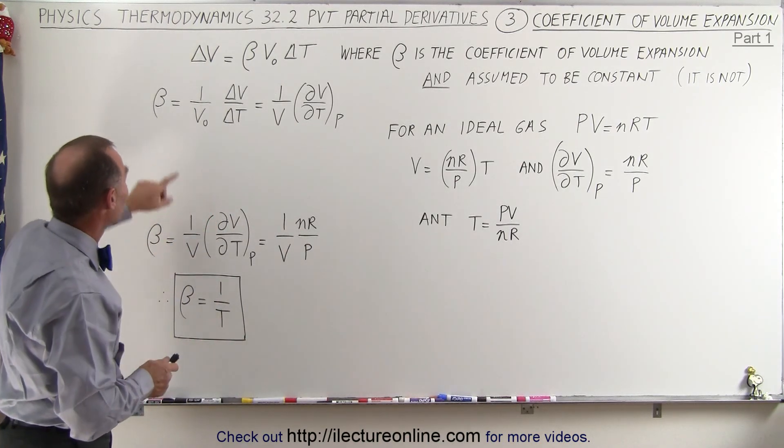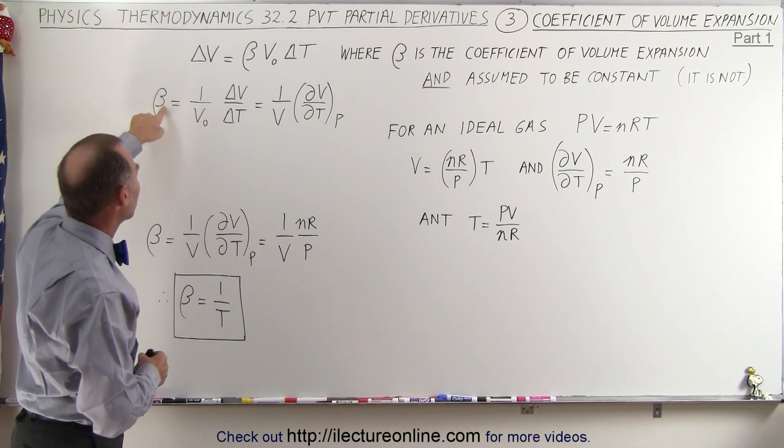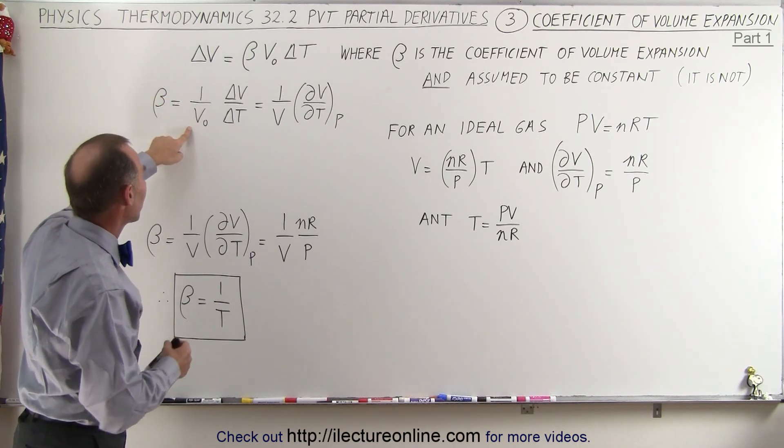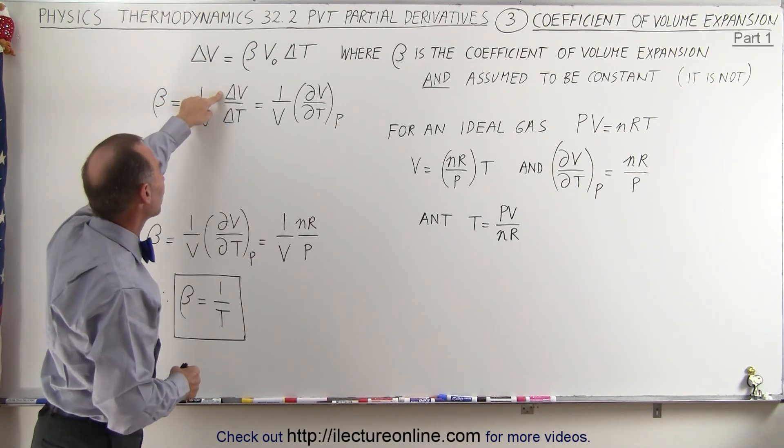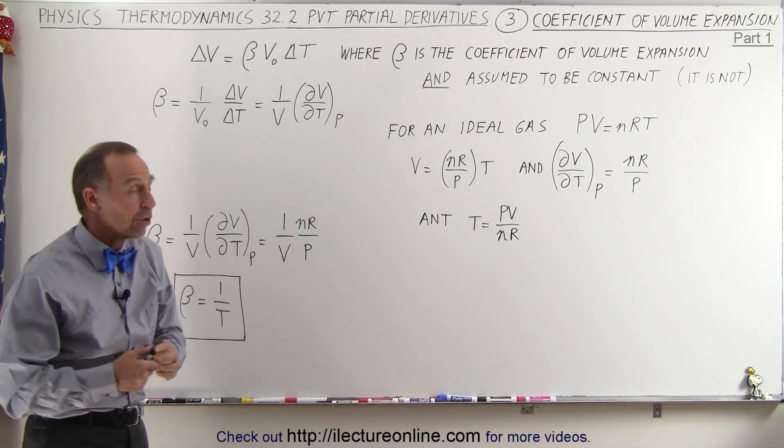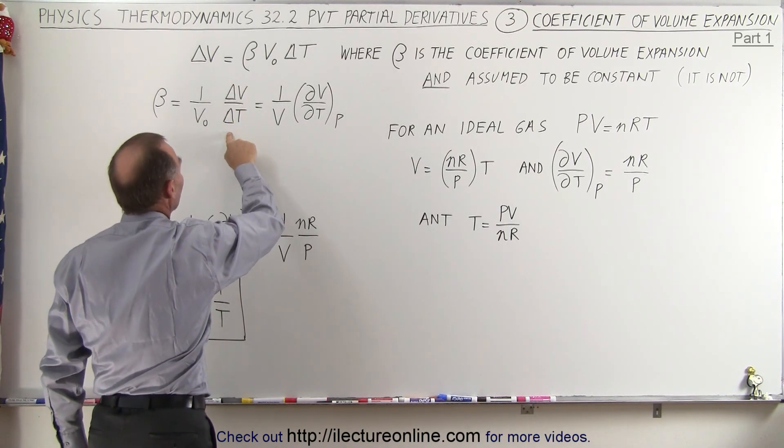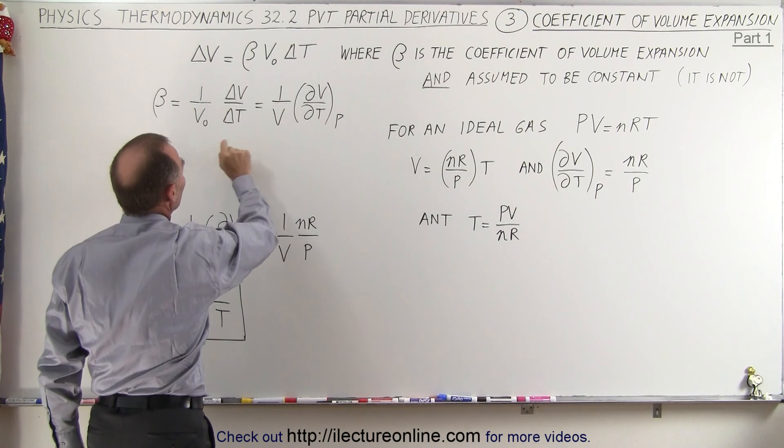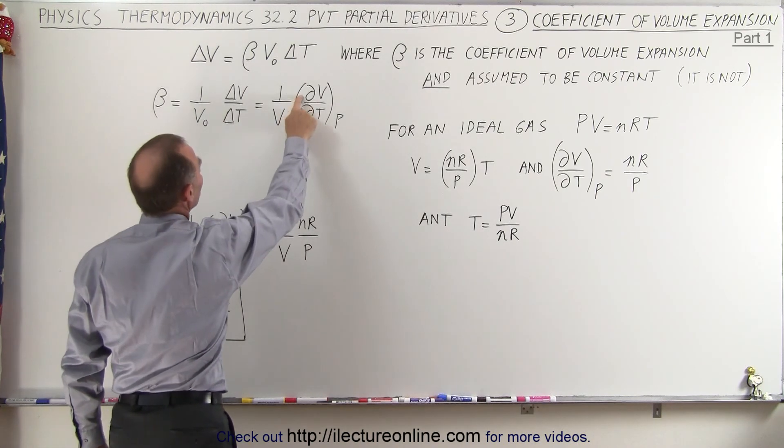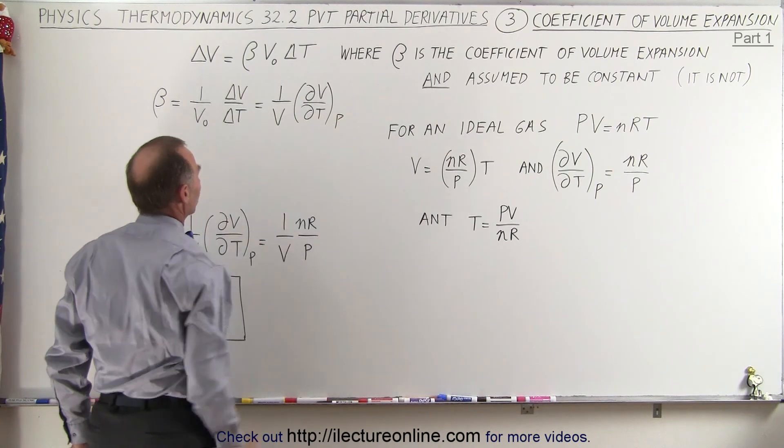So let's take a closer look. Since we can solve for beta, the coefficient of volume expansion being one over v initial times the change in volume divided by the change in temperature, and then in the previous video we saw that if the pressure remains constant, this ratio in the limit as the change in temperature goes to zero we can express as the partial derivative of the volume with respect to temperature with the pressure constant.